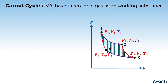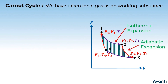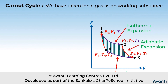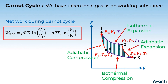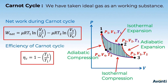To summarize the Carnot cycle: it begins with isothermal expansion, followed by adiabatic expansion, then isothermal compression, and finally adiabatic compression. The net work during the Carnot cycle is μRT1 ln(V2/V1) − μRT2 ln(V3/V4), and the efficiency of the Carnot engine is 1 − T2/T1.